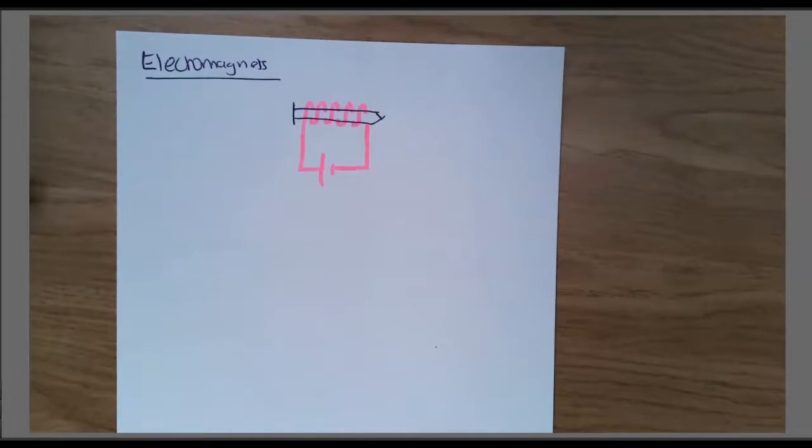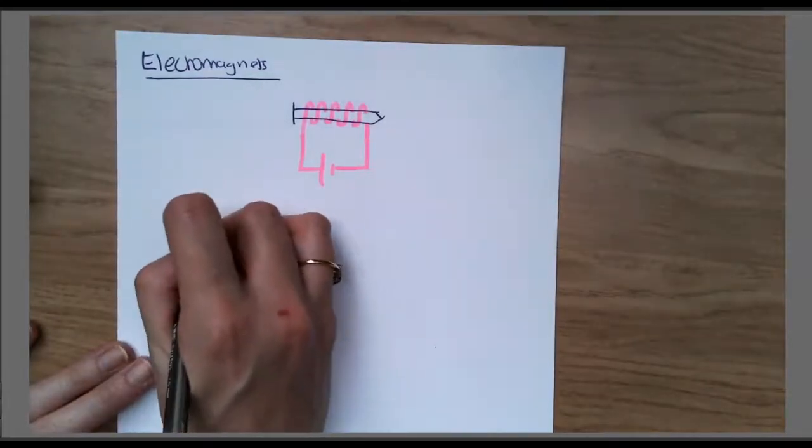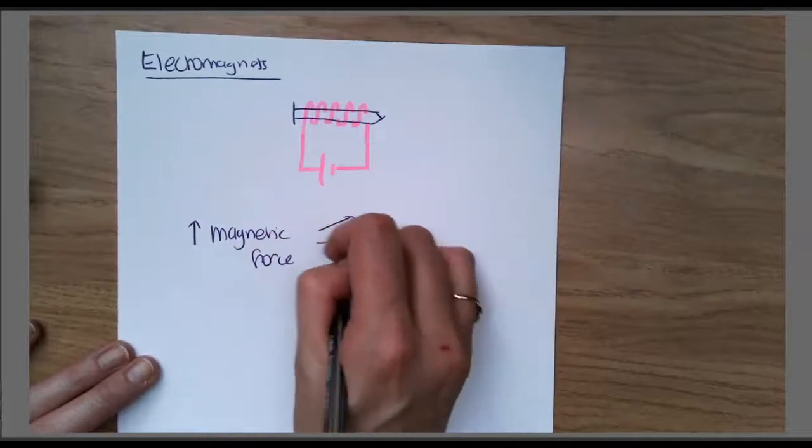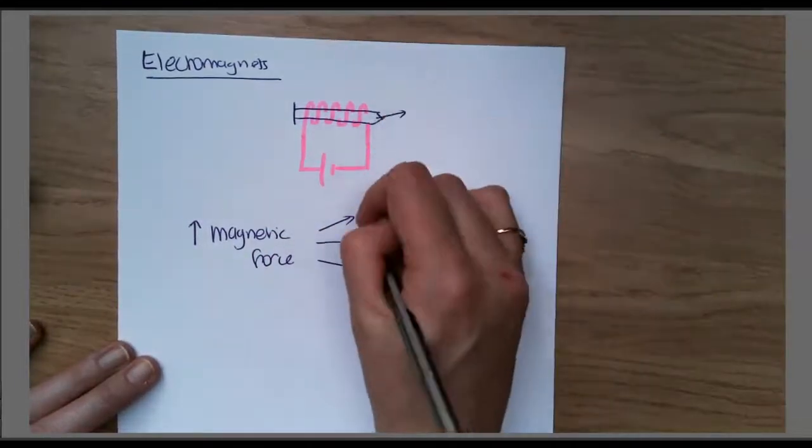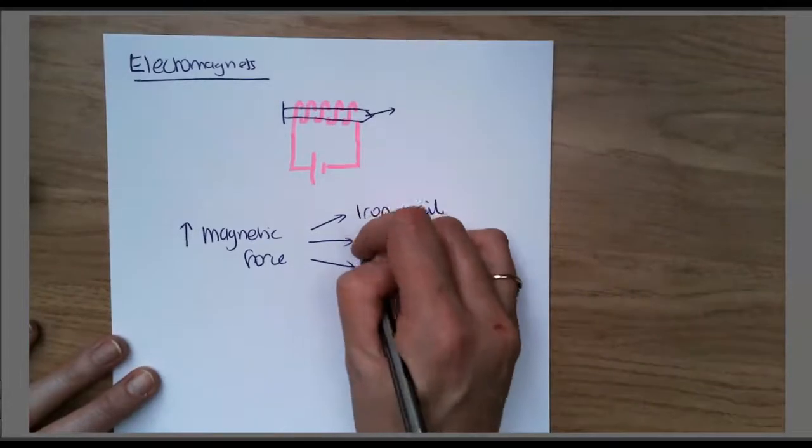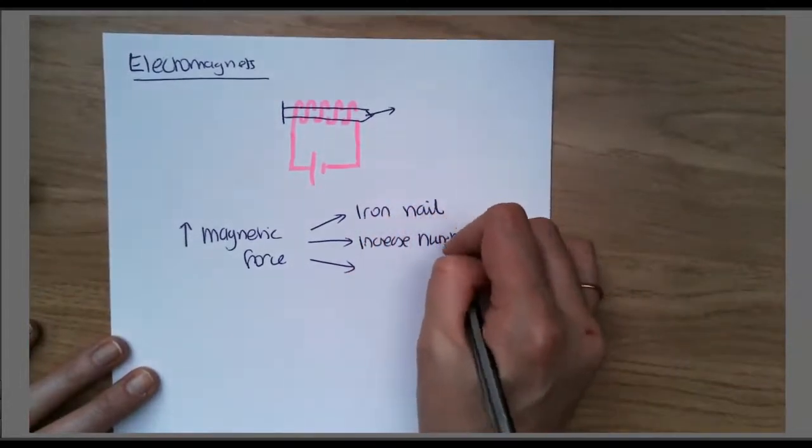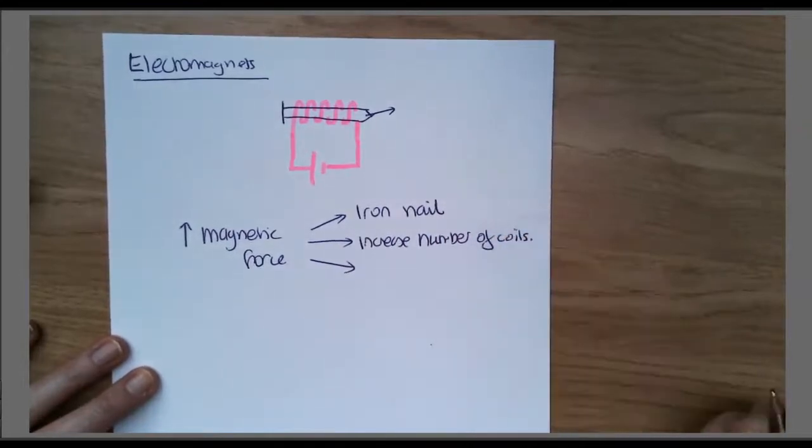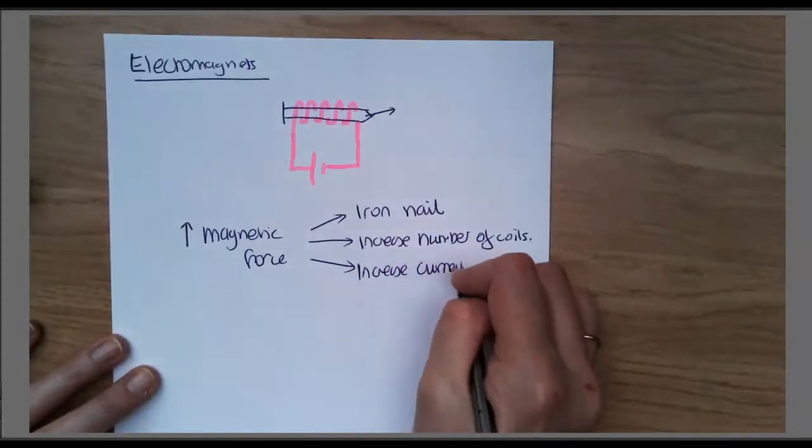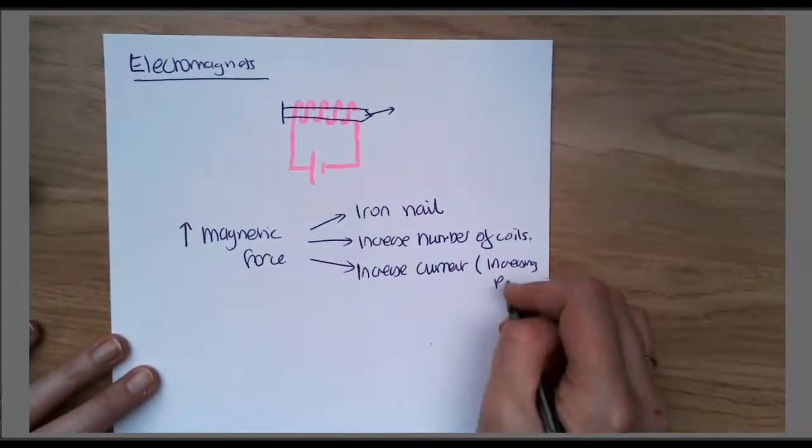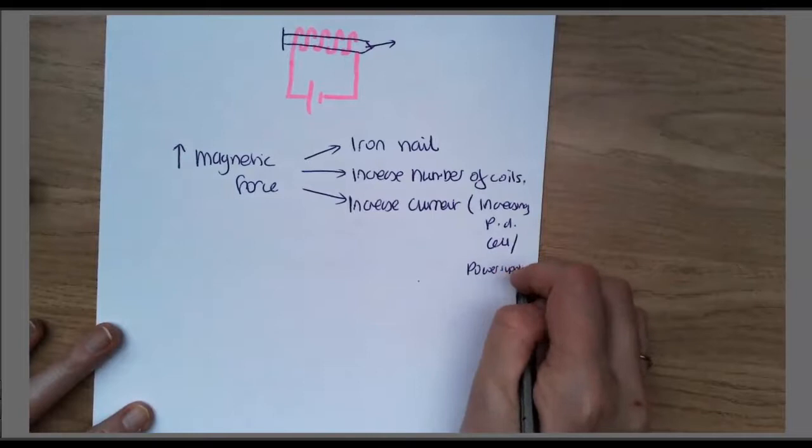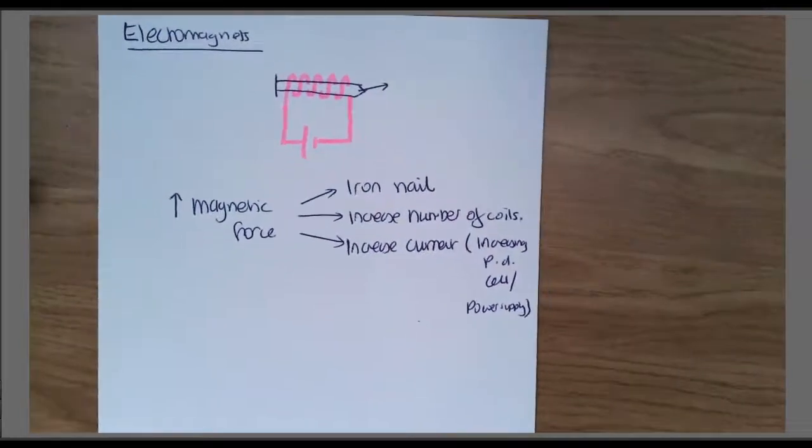That coil of wire, we put a current through and it became magnetic. If we want that magnetic strength to increase, we can do three things. The first thing is we introduced an iron nail because iron is magnetic and so it makes that magnetic force stronger. We can increase the number of coils, and we can also increase the current by increasing the potential difference of the cell or power supply. All of those things increase the electromagnetic effect.